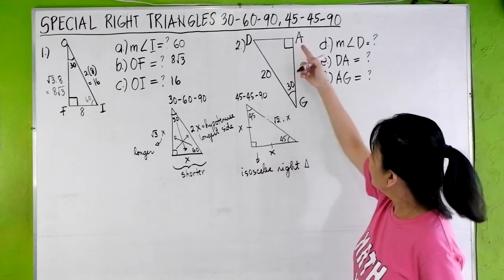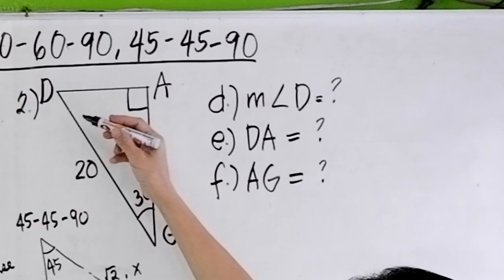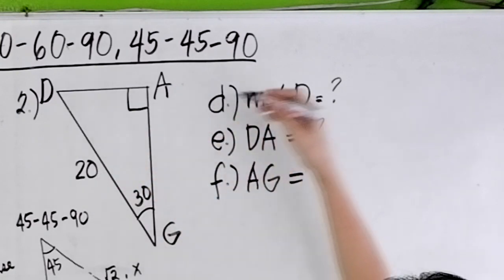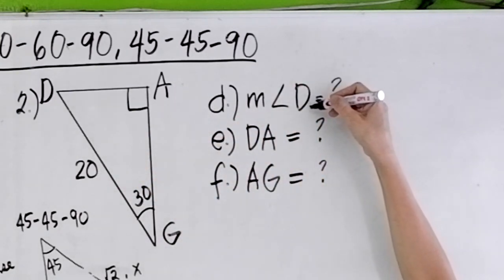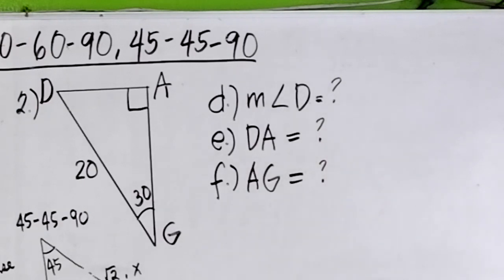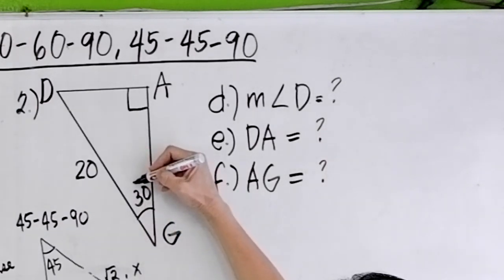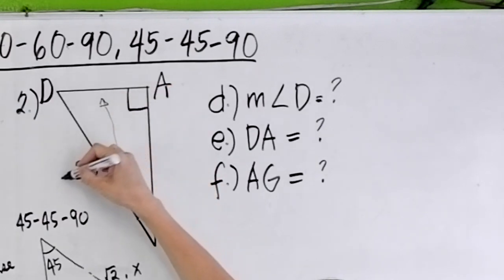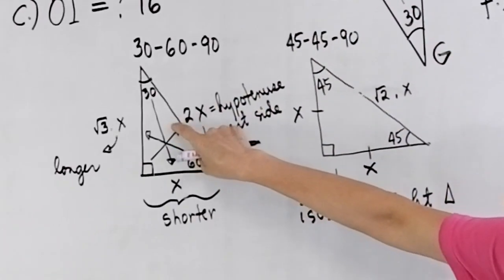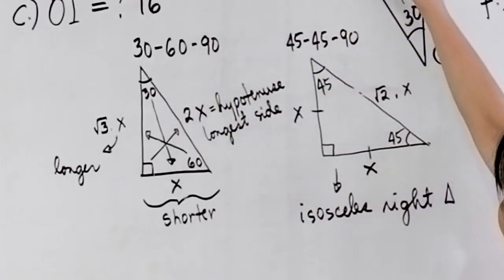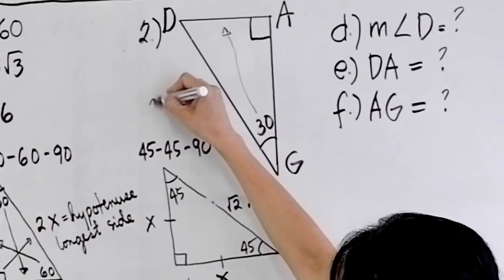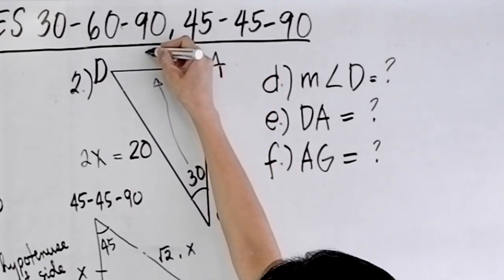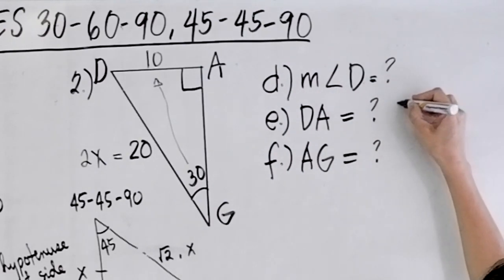Problem number 2: you have triangle DOG. This angle is 30 degrees and DG is 20. You're asked to solve for the measurement of angle D, DA, and AG. Opposite the 30-degree angle is X, and the hypotenuse DG is 2 times X. Therefore, DA must be 20 divided by 2, which is 10. So DA is 10.